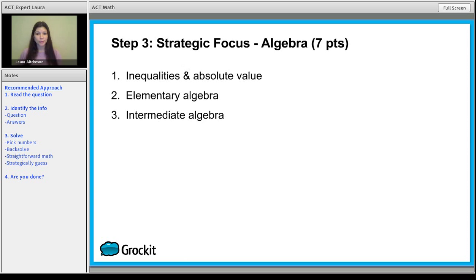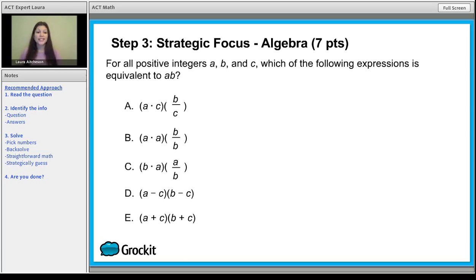Now in our strategic approach, we want to make sure that we're focusing on algebra. It's worth seven points, and it can help you out with the other concepts as well. Here's an example of a question from Grockit, and it really helps you to figure out what approaches you have available to you in addition to knowing straightforward algebra. For all positive integers a, b, and z, which of the following expressions is equivalent to ab?